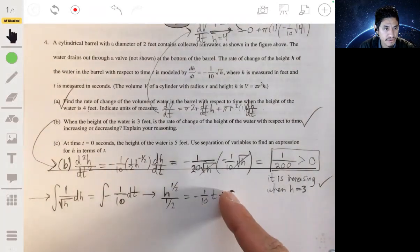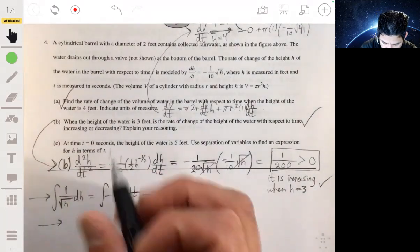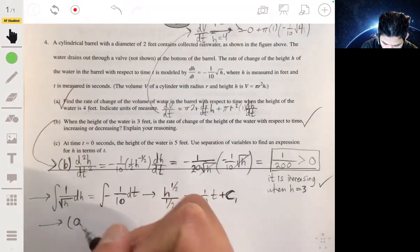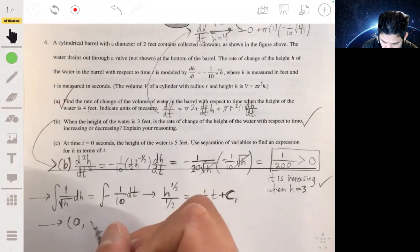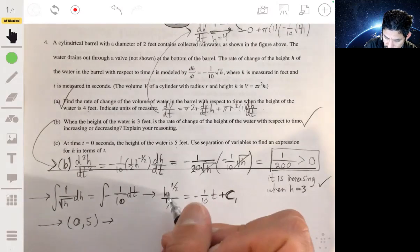Now we can find c1 by using this initial condition. We're told that when t is zero, the height is five. So we plug in the point zero five.